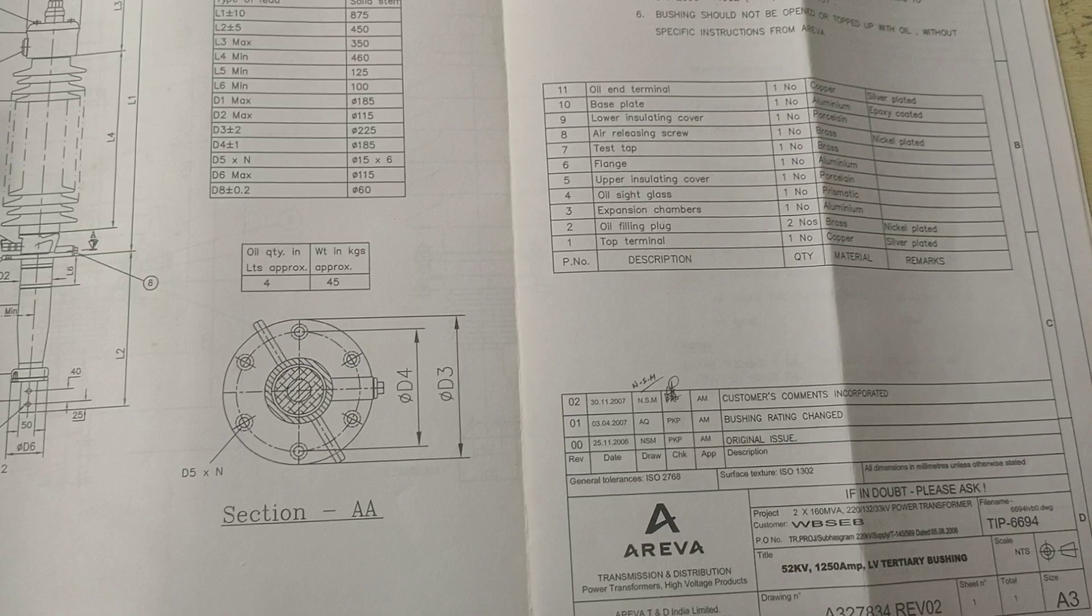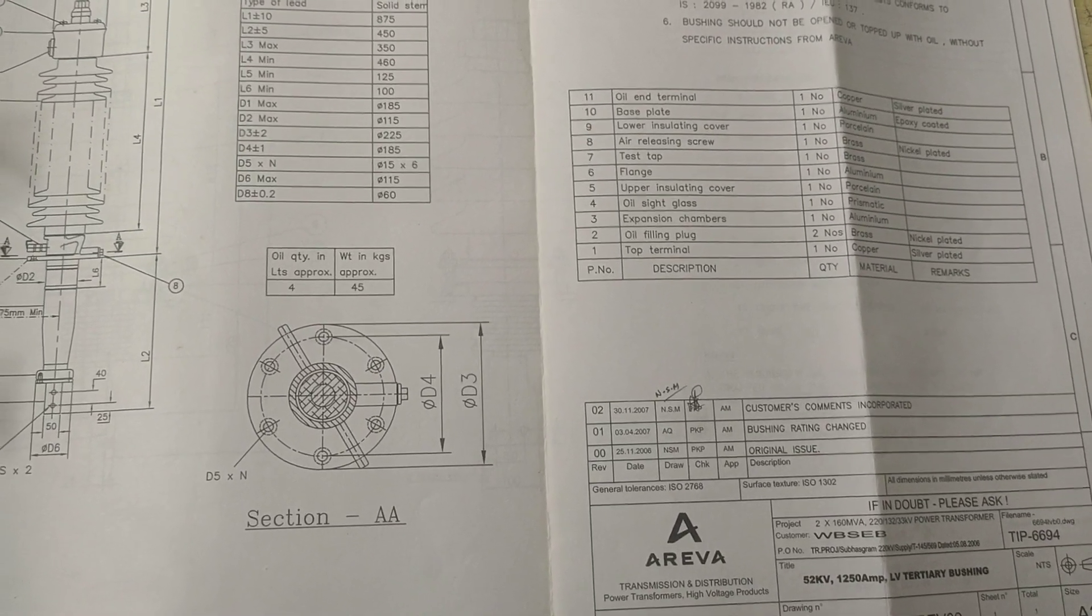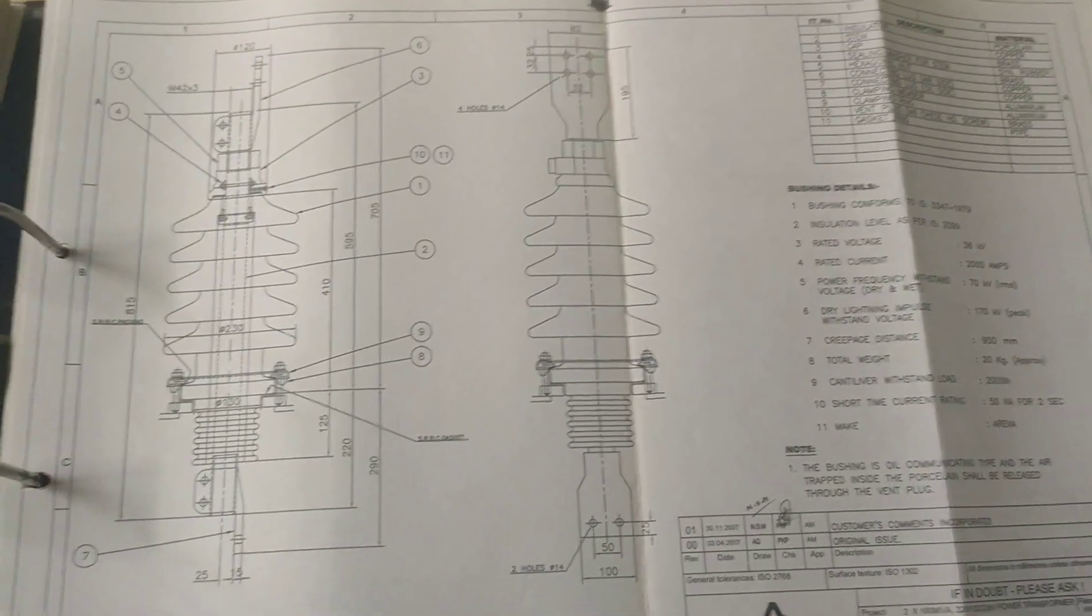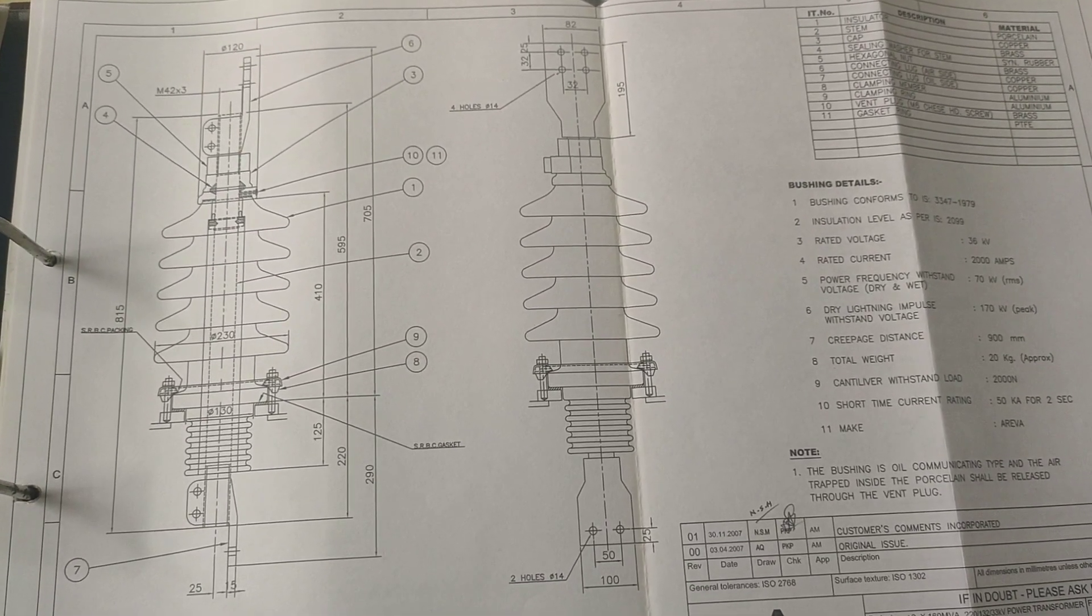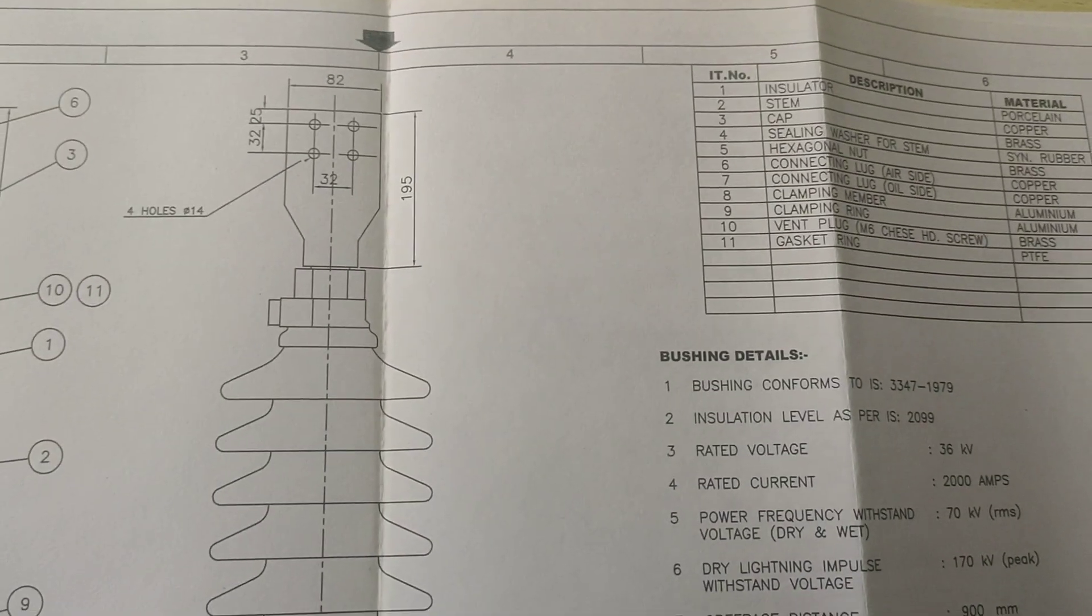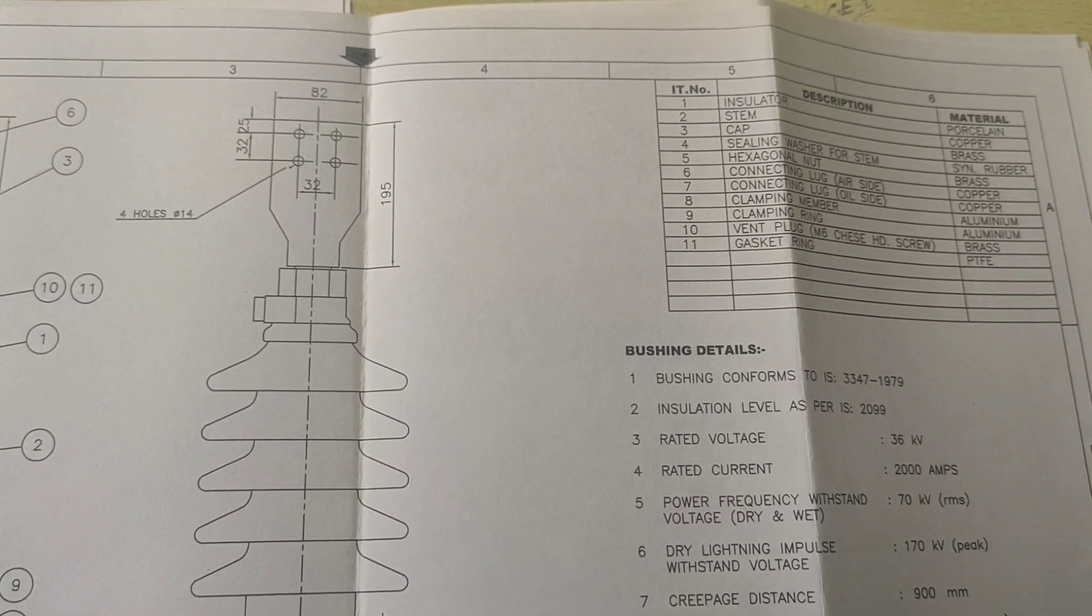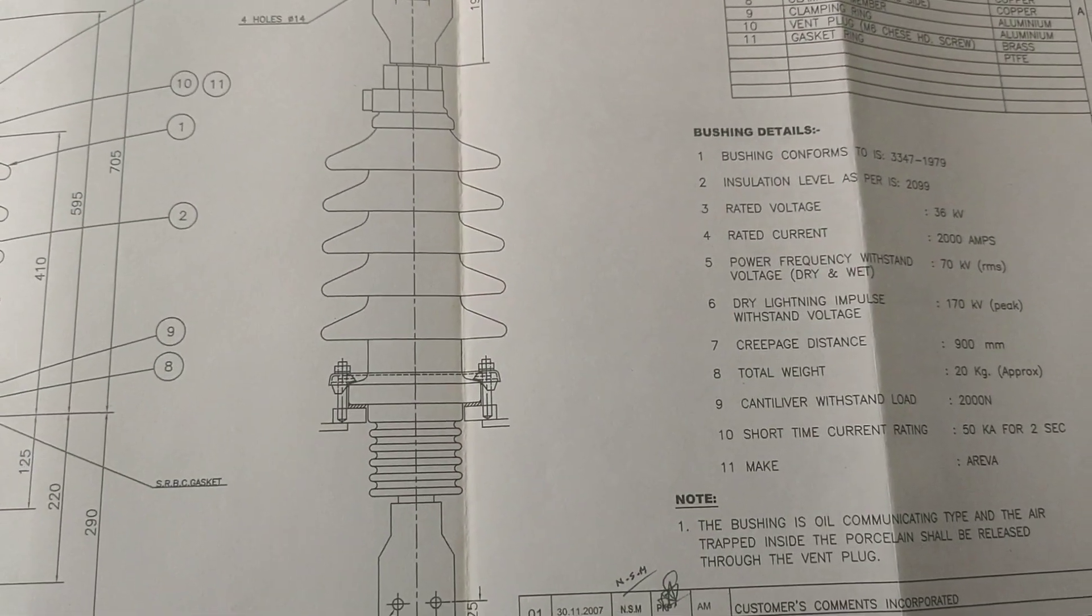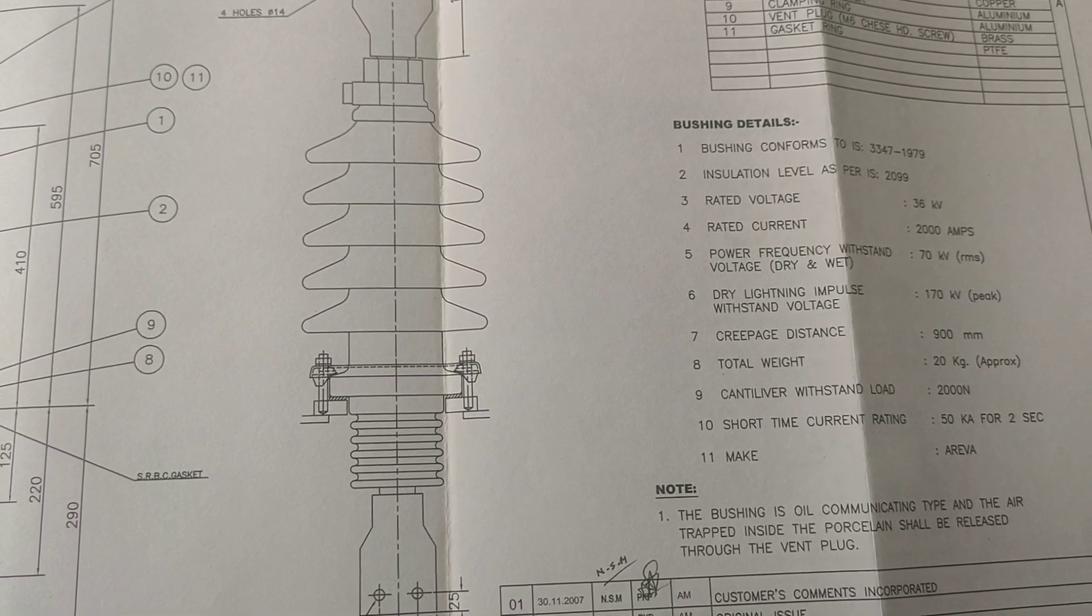This is the HV neutral type bushing. The pictorial representation is given here. All the dimensions are given here, and the specifications and the different materials used are given here. Connector, copper, aluminum, bushing connectors are given here. Rated voltage 36 kV, rated current is 2000 ampere, and the different parameters are given here.